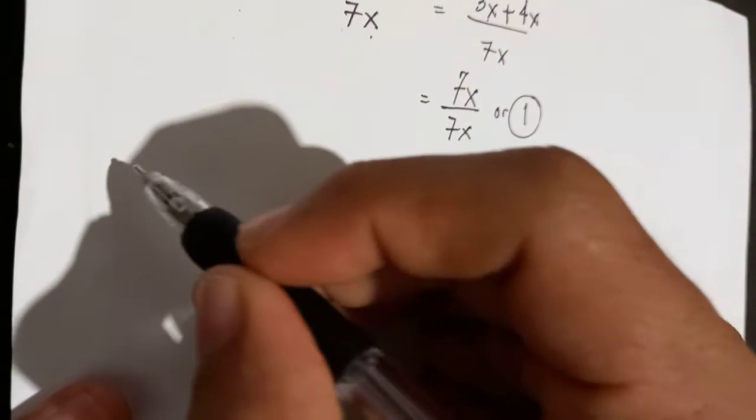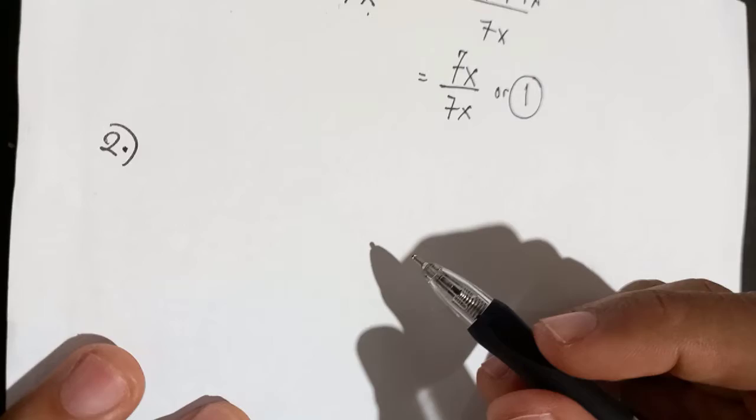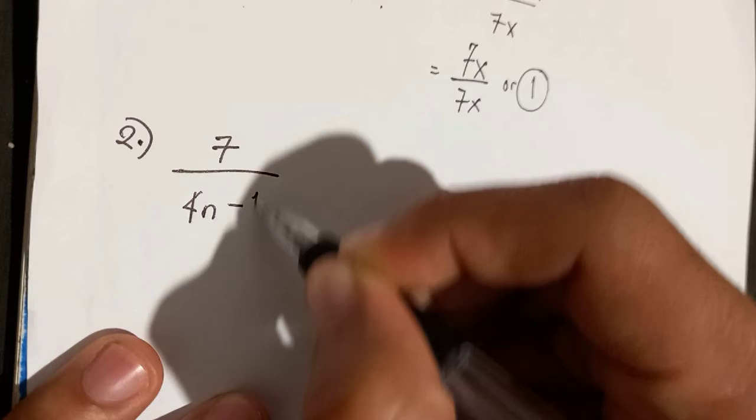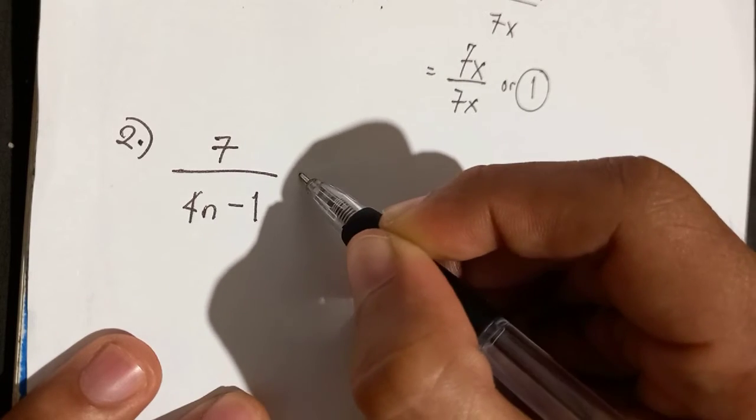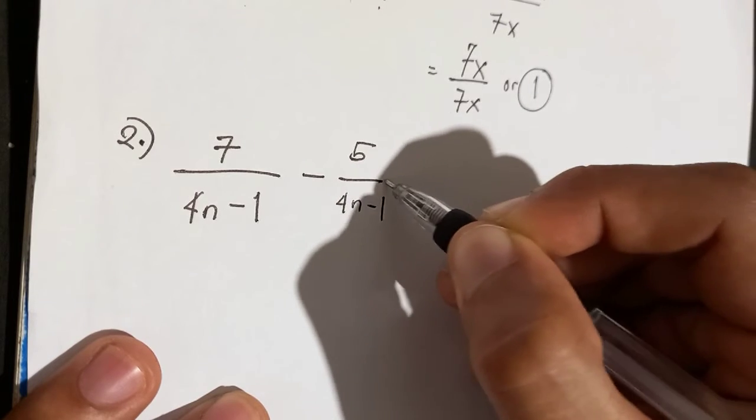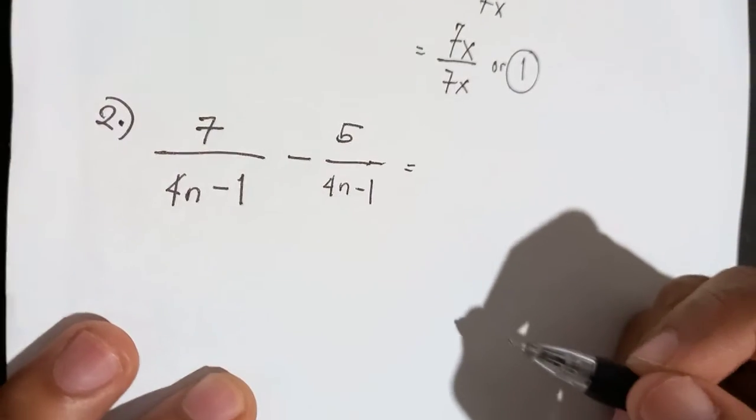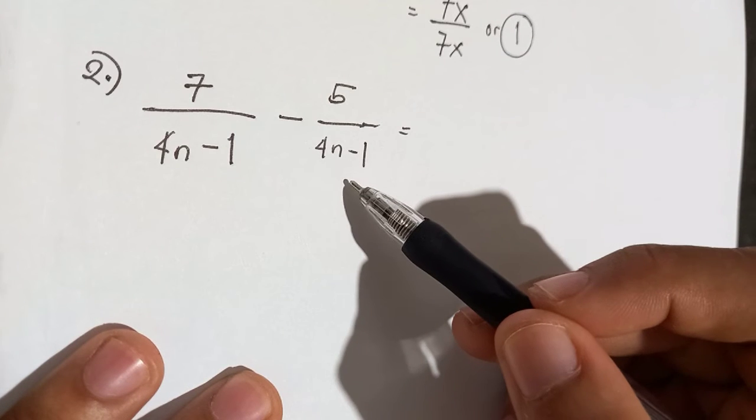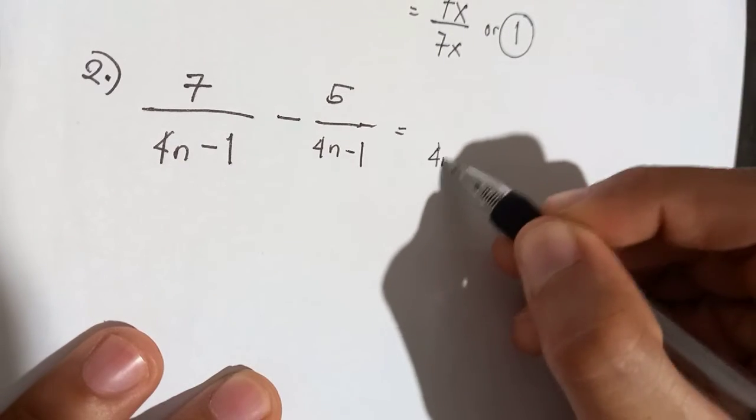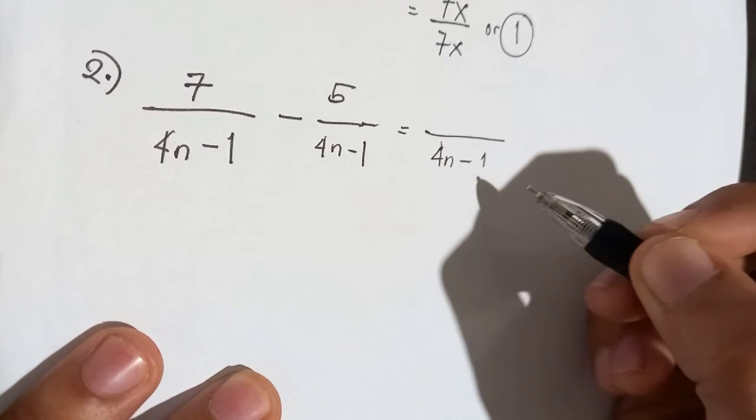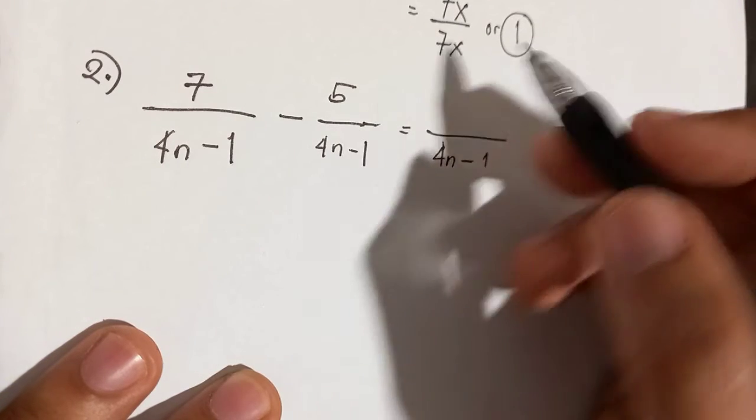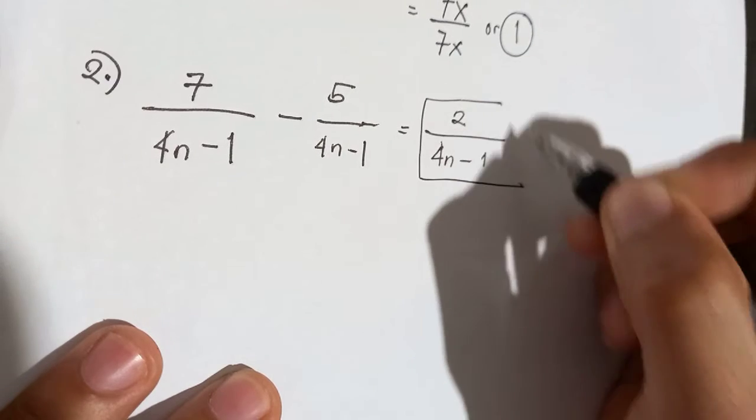Next, number 2. 7 over 4n minus 1, minus 5 over 4n minus 1. It is very obvious that our denominators are common. So therefore, copy 4n minus 1. Then simply subtract the numerators. So 7 minus 5 will give you 2. So this is the final answer.